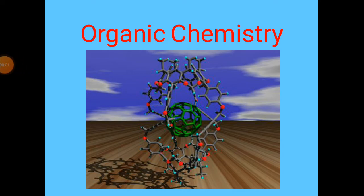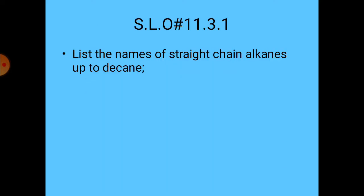Hello students, welcome to online classes. Hope you all are fine. Today we are going to start chemistry session 5 — organic chemistry — and SLO number 11.3.1: list the names of straight chain alkanes up to decane.